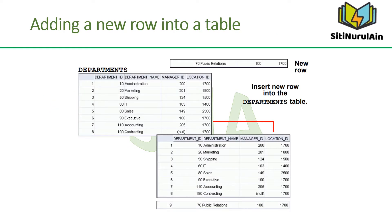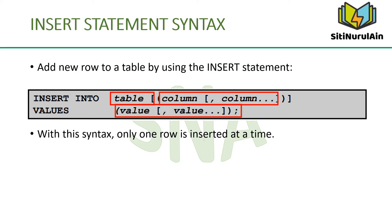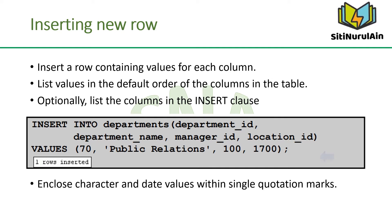The graphic in the slide illustrates the addition of a new department to the departments table. With the INSERT statement syntax, you can add new rows to a table by issuing the INSERT statement. In the syntax, table is the name of the table, column is the name of the column to populate, and value is the corresponding value for the column. Because you can insert a new row that contains values for each column, the column list is not required in the INSERT clause. However, if you do not use the column list, the values must be listed according to the default order of the columns in the table, and a value must be provided for each. For clarity, use the column list in the INSERT clause. Enclose character and date values within single quotation marks.